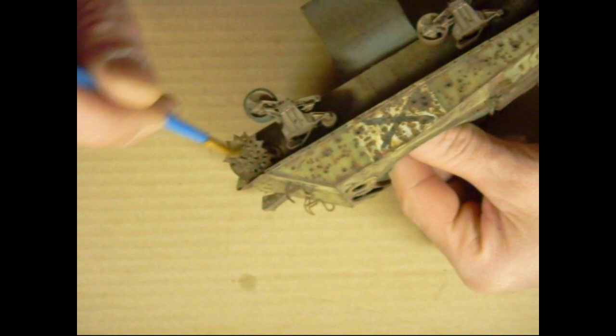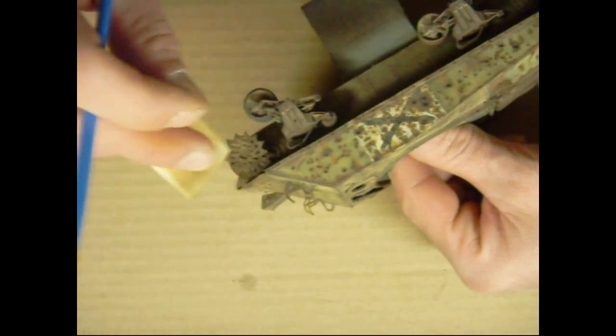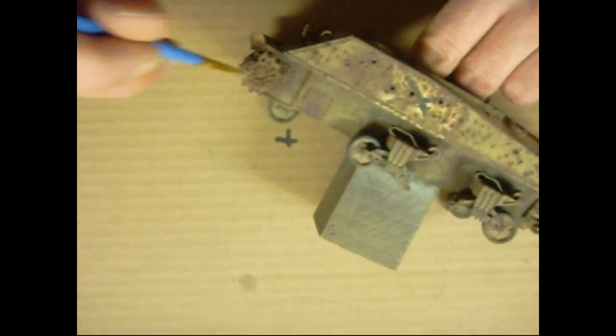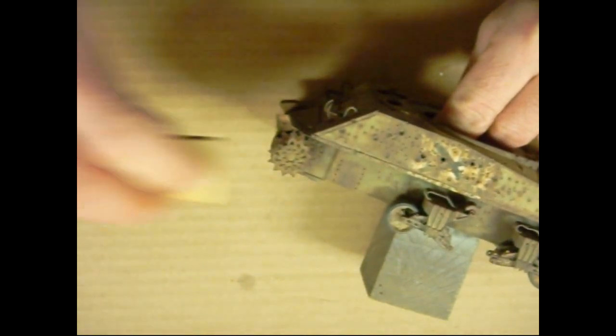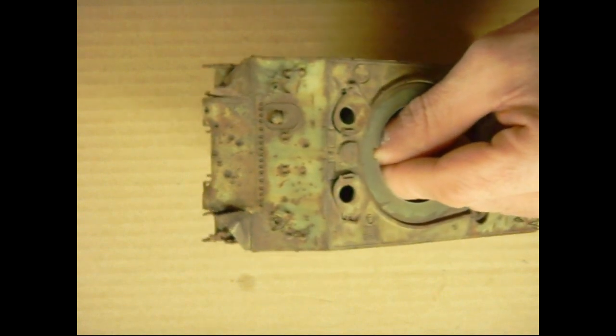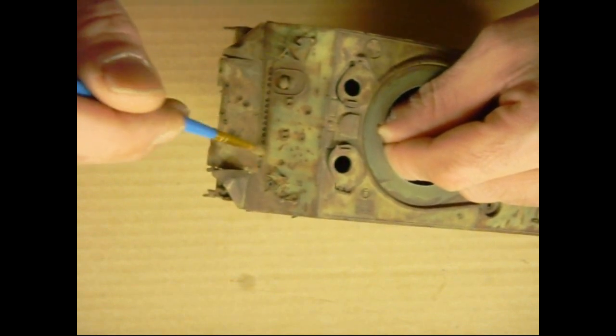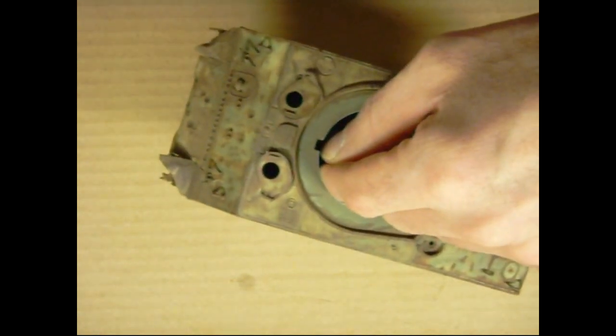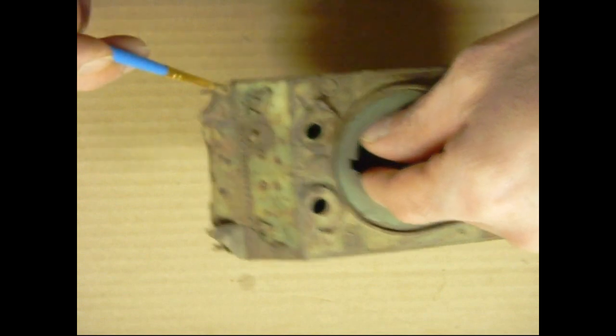So I'll add some in the sprocket. Sprocket isn't glued on yet, that's why it's a little wobbly. You don't want to put too much on there. I'll just have to go ahead and do up a little base for it, to mount it on.